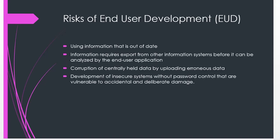Some of the risks that come with end-user development include users may use information that is out of date, or produce inaccurate information. It may also lead to users having to export information from other systems before it can be used, resulting in information being scattered and potentially out of date by the time it is used. There is also the risk of corruption of information held in central databases if the end-user system does not adhere to proper database connection methodologies, and insecure systems may result in information being stolen or systems being hacked through the end-user-developed application.